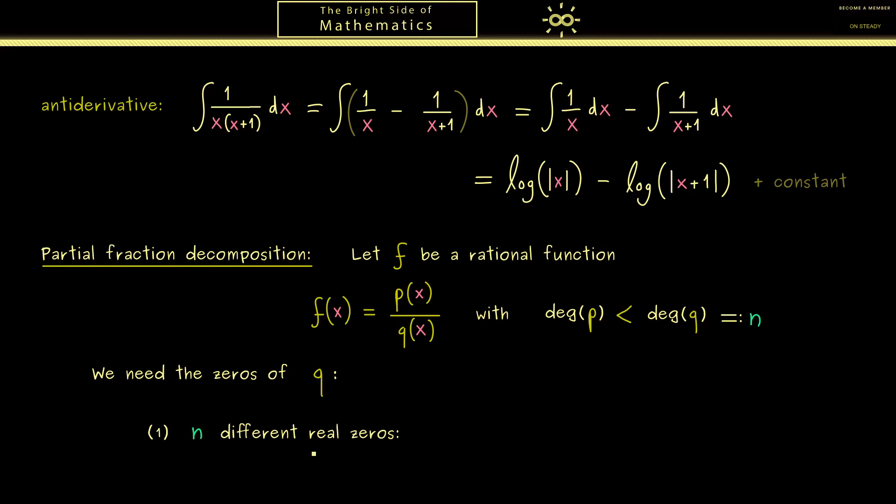The first case is the best case where we find exactly n different real zeros. So maybe let's call them x₁, x₂ and so on until we reach xₙ.